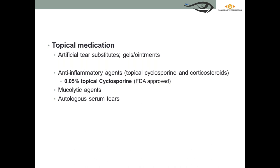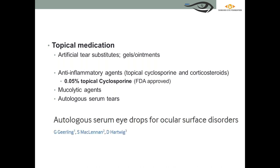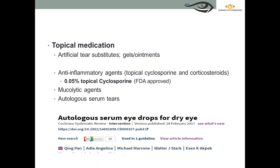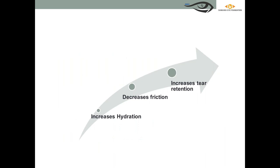Autologous serum is another mode of artificial tear substitute with well-supported literature demonstrating its effectiveness for ocular surface disorders. It works by increasing hydration, decreasing friction, increasing tear retention on the ocular surface, and reducing inflammation — providing symptomatic relief to patients, particularly in severe or chronic dry eye cases.